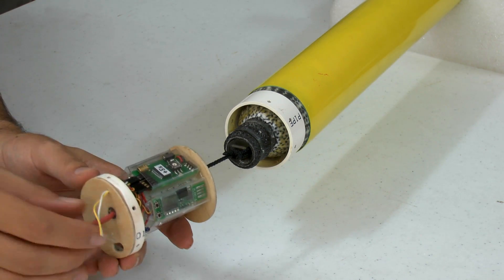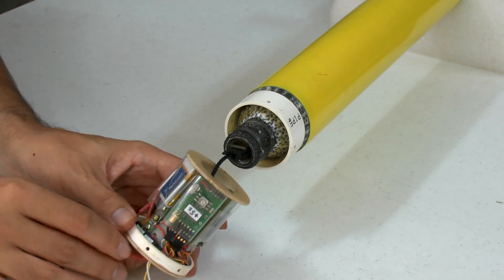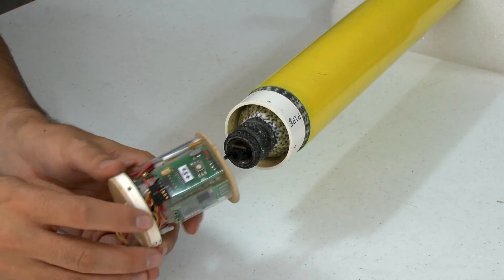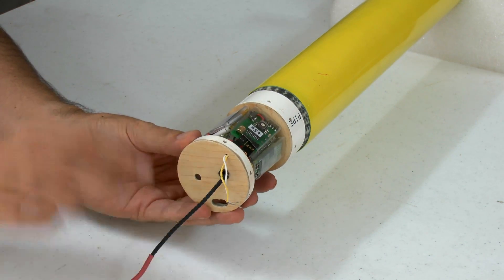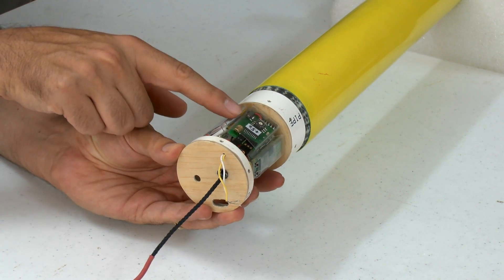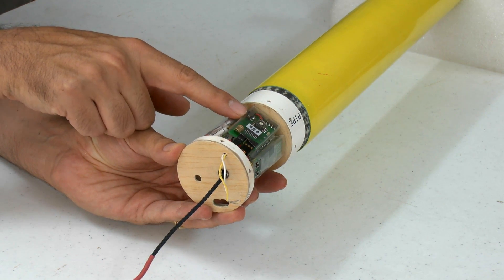Next comes the electronics package, and that just slides over the shock cord and the top of the pressure chamber fits inside this fiberglass tube. The lower centering ring sits up against the PVC tube and that helps support all of the electronics that's in here against the g-forces.